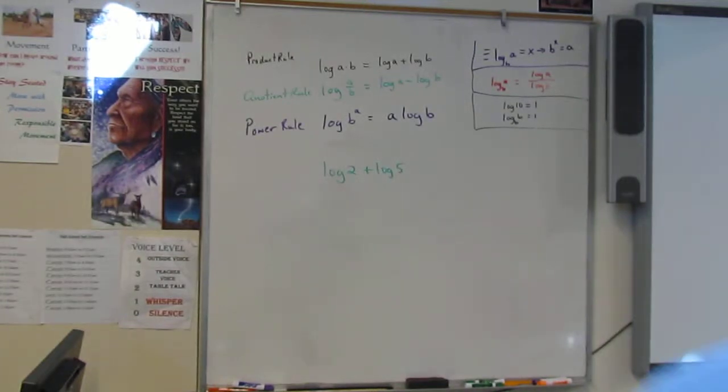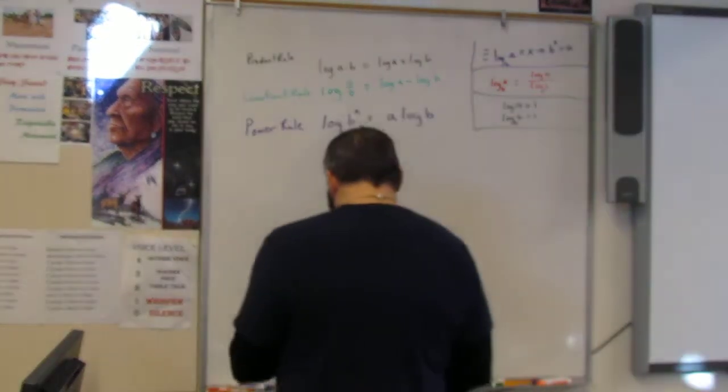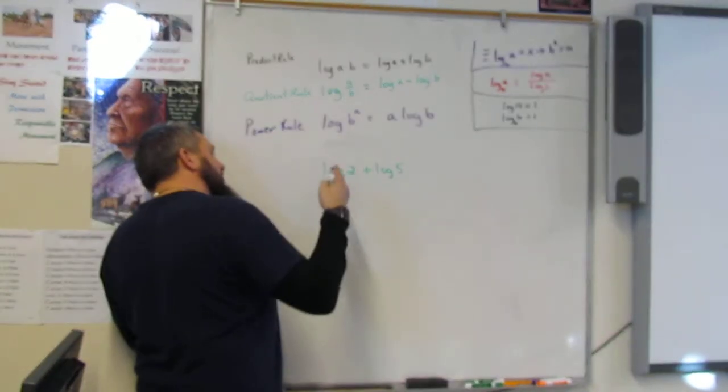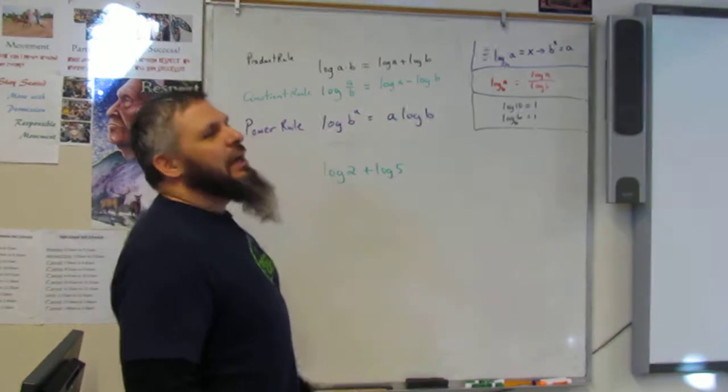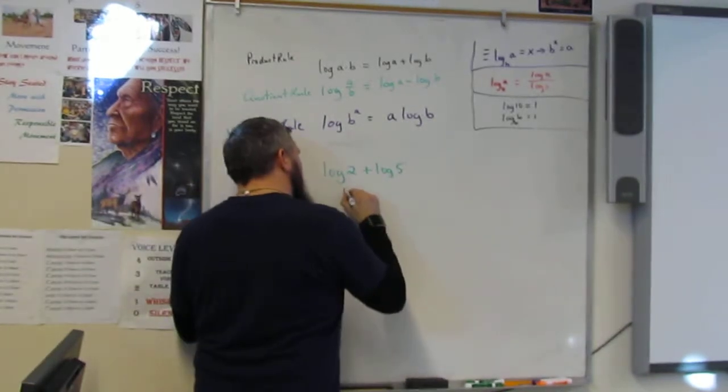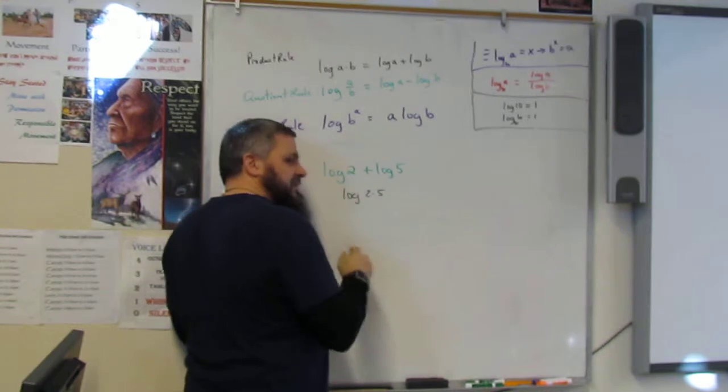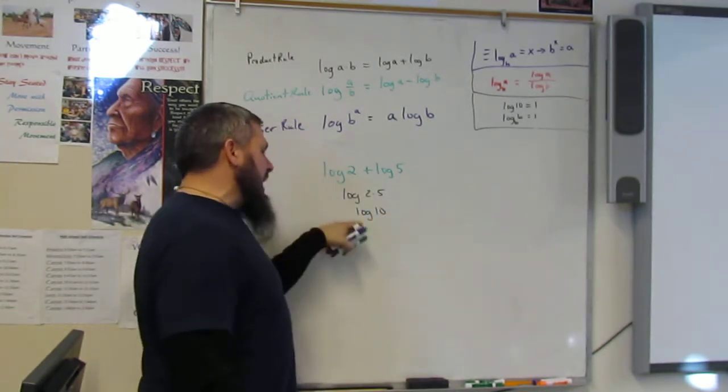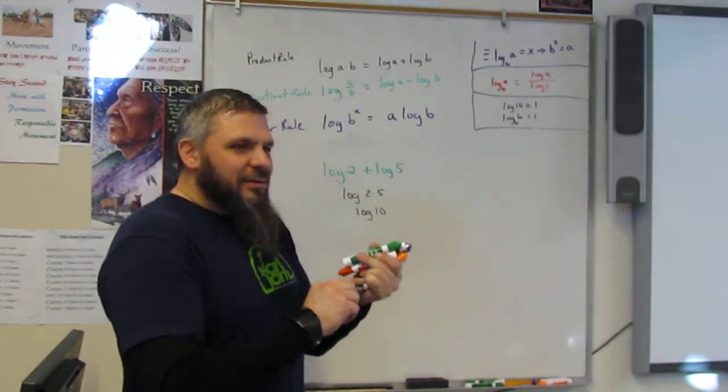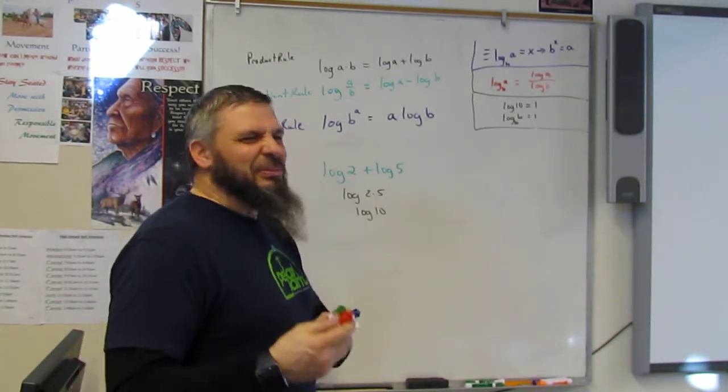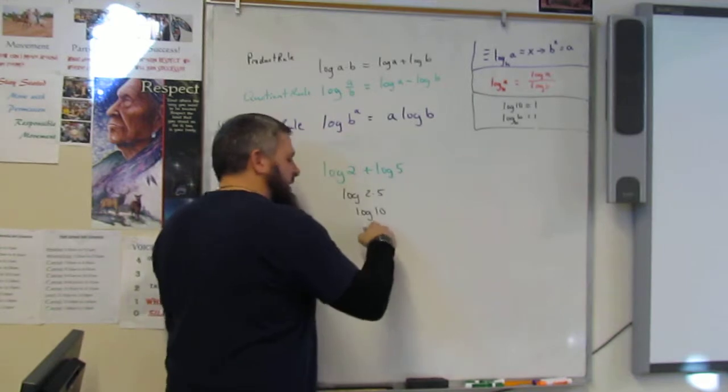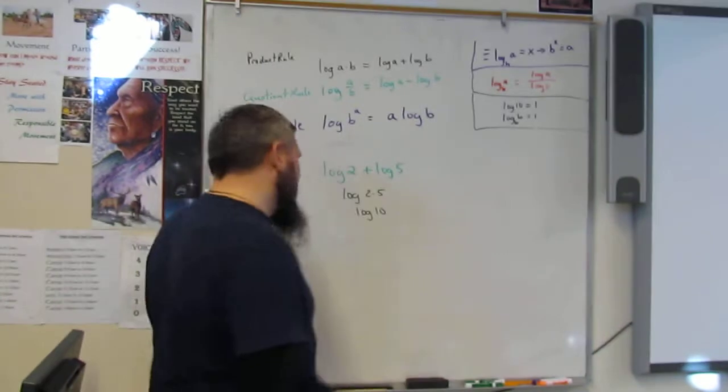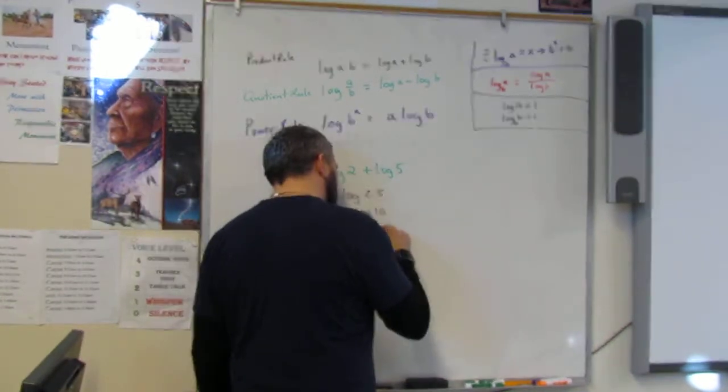Are you ready to kill this? Yes, multiply 2 times 5. Bam! What? I didn't even get to say the question. Log of 2 plus log of 5, and you're like, yeah, let's just do this. Log of 2 times 5, which is? 10. Log of 10. And we know that that base has what?